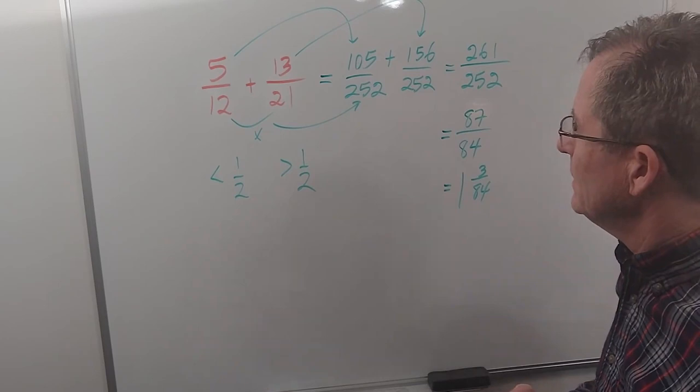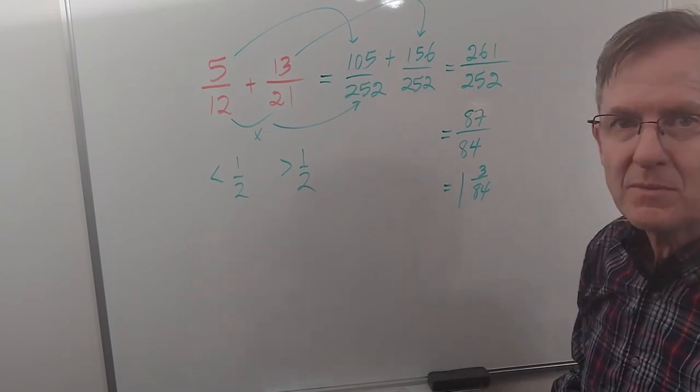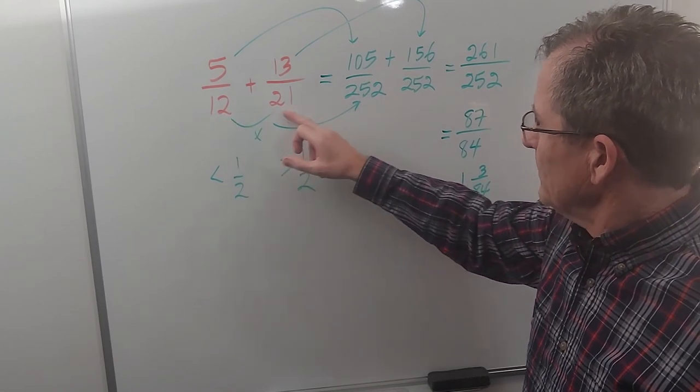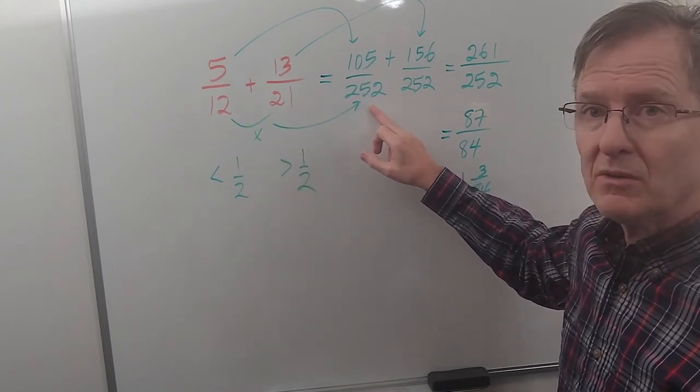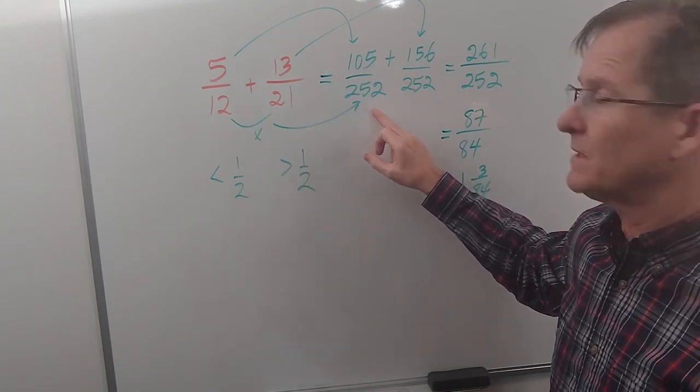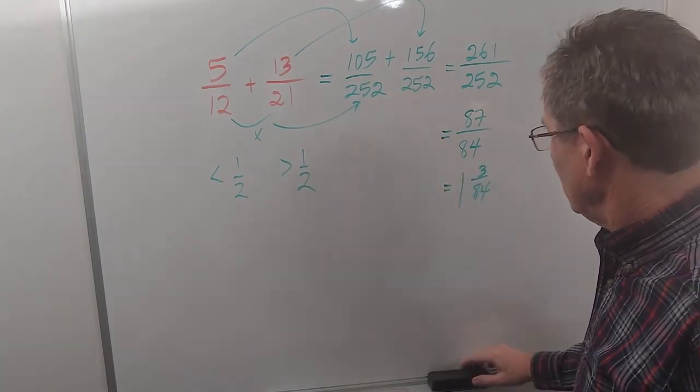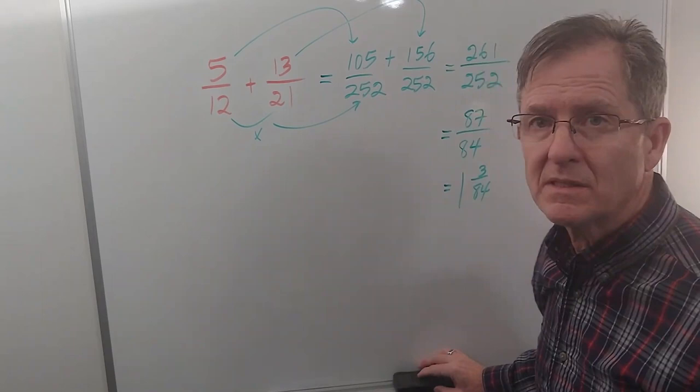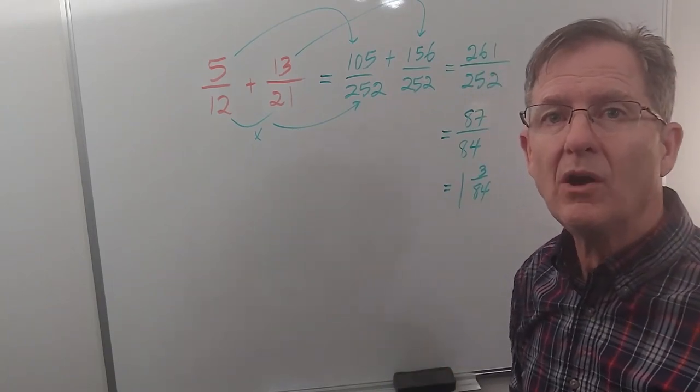However, this is not the best way to do it, I'm sorry to say, because although 12 times 21 is 252, it's not the smallest common denominator. Let's see if we can do it more simply and of course get the same answer by using the lowest common denominator.